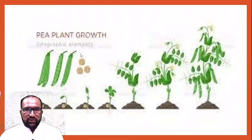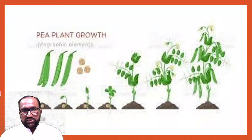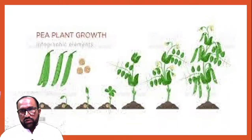The growth stages of pea crop are: seedling stage, branching stage, flowering stage, and pod formation stage.